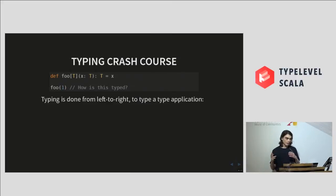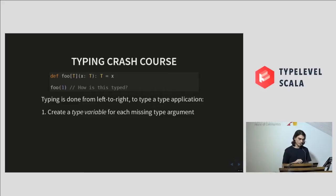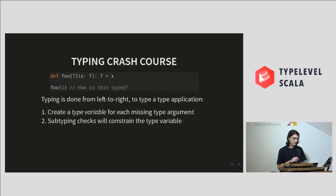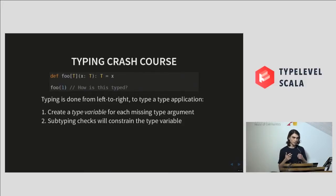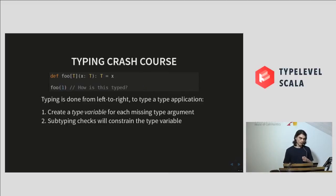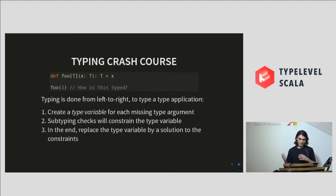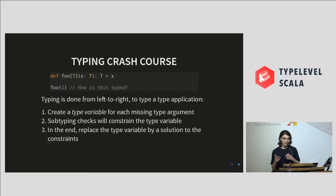Typing is done from left to right. When you type a type application, you first have to create type variables for each missing type argument. Then there will be a bunch of subtyping checks done during the course of type checking that will constrain this type variable. And finally, we will replace this type variable by a solution to these constraints if they exist and type-check.